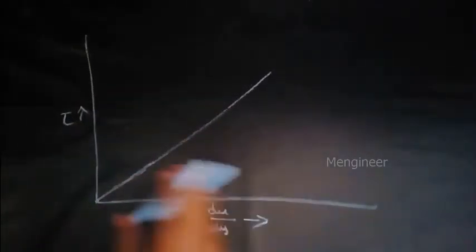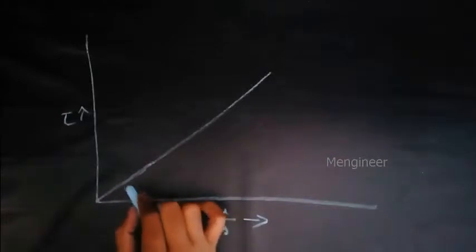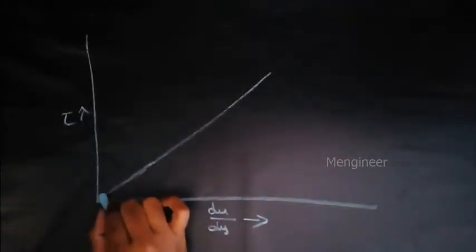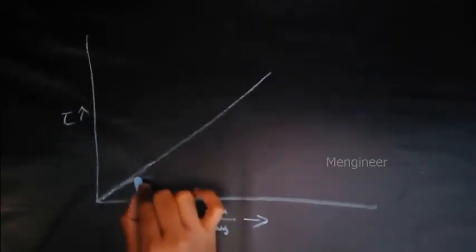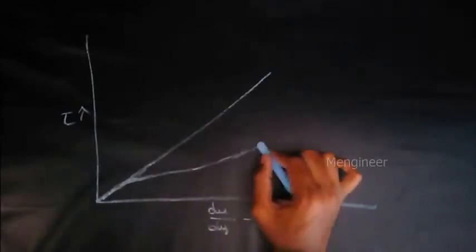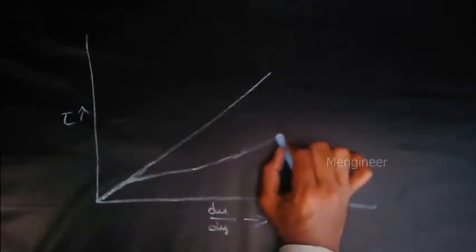And the other type of fluid is dilatant fluid. Dilatant fluid first behave like a Newtonian fluid only, and after that the graph becomes like this.